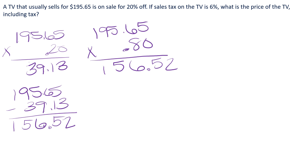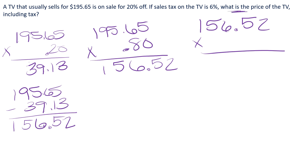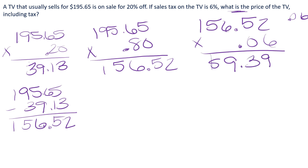Then you have to figure out what the sales tax is. Take your sale price and multiply it by your sales tax, which is 6%. Don't make the mistake of using 0.6 — remember, it's 0.06 because that 6 is part of 100. So when you multiply $156.52 by 0.06, you get $9.39. That is your sales tax.